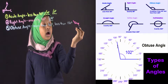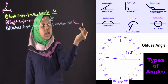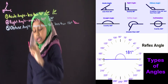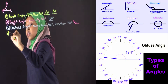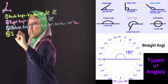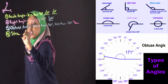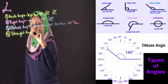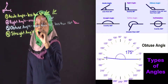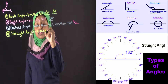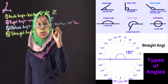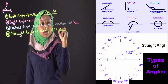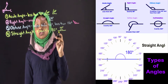What happens when the obtuse angle turns to 180 degrees? It's going to be a straight line — this side is going to be a straight line, and that side is going to be a straight line — so it's not going to be an obtuse angle. It's going to be called a straight angle. Number four, which is a straight angle. The meaning of straight angle is it's an angle that is exactly 180 degrees. I'm going to draw a straight angle over here. This is a straight angle because this angle is a straight line and it's exactly 180 degrees.